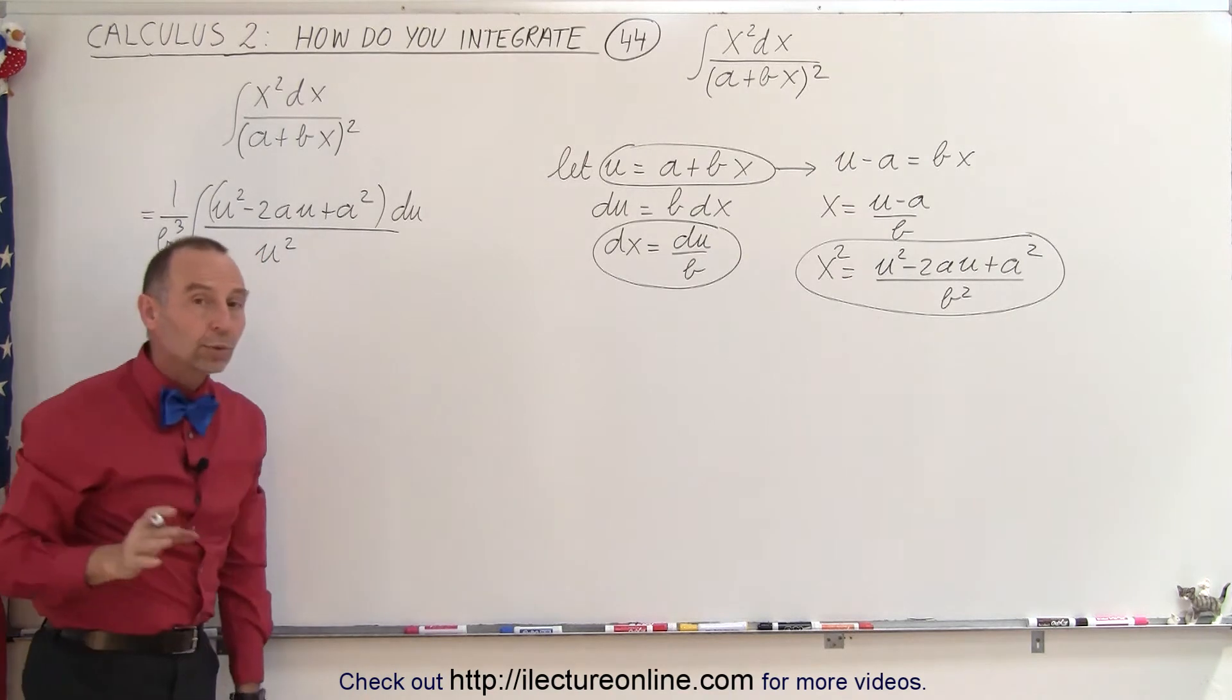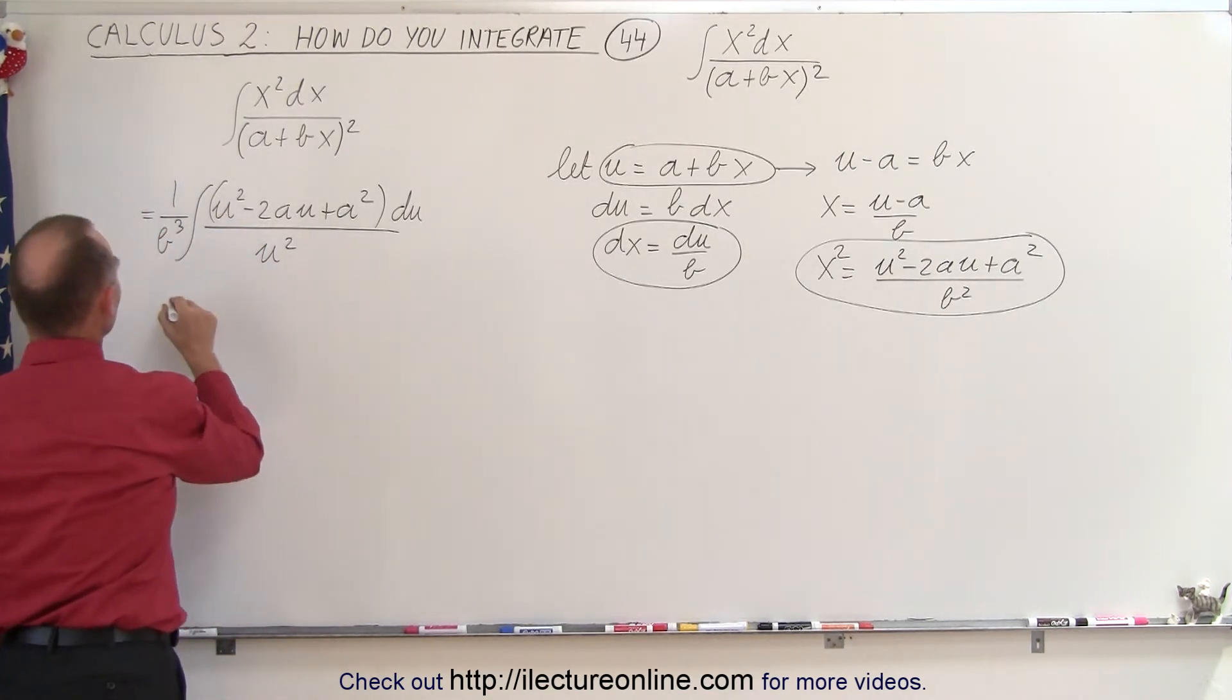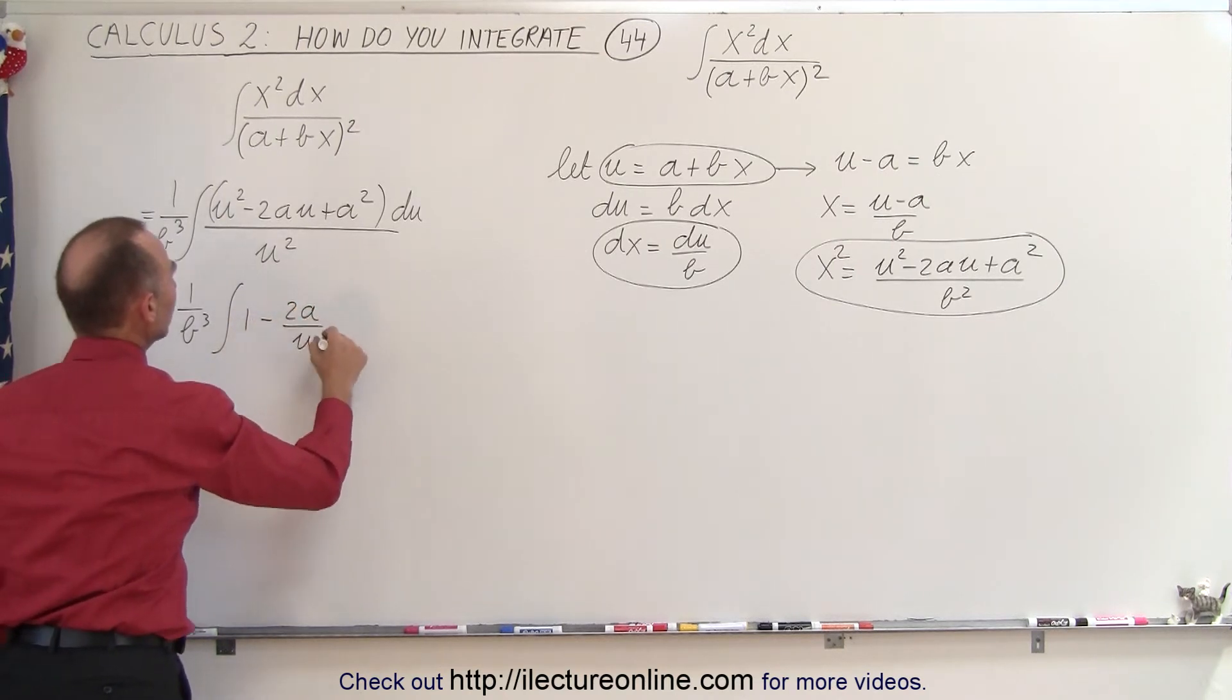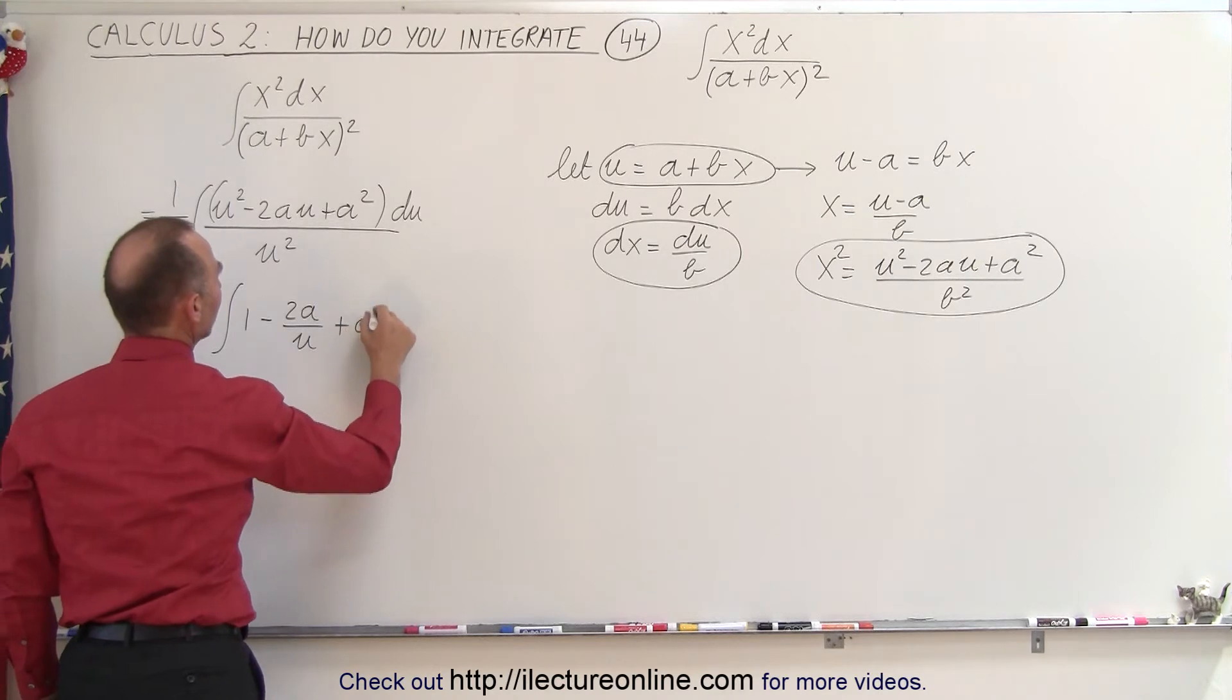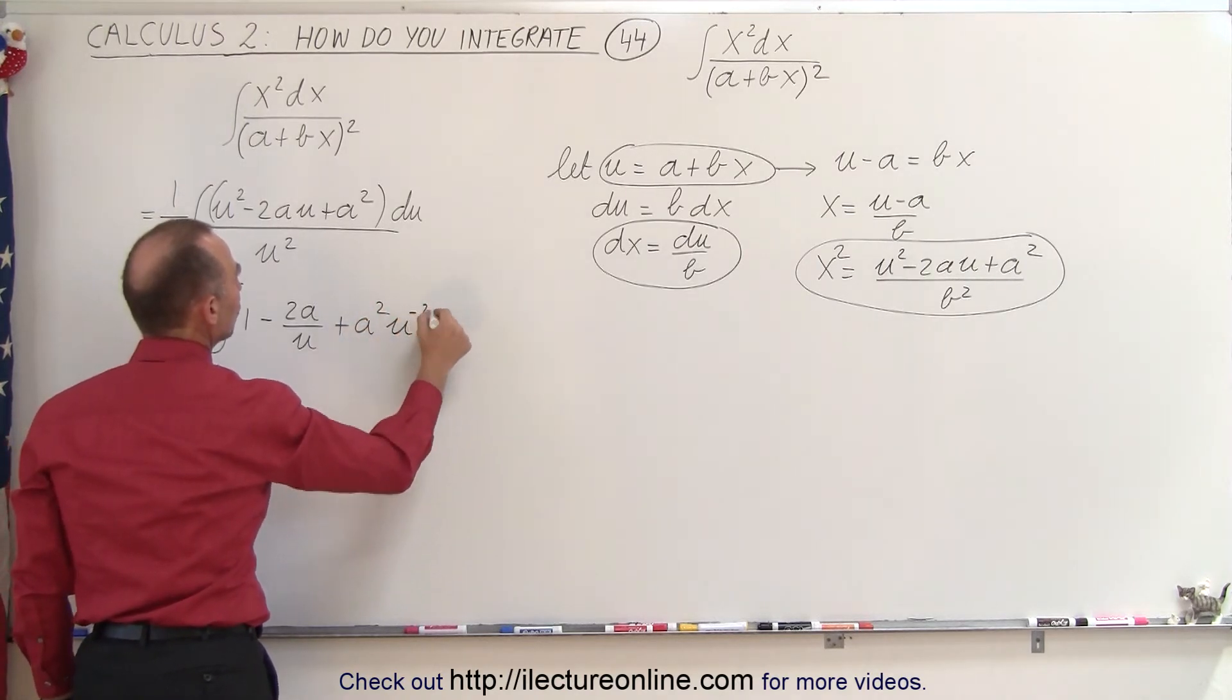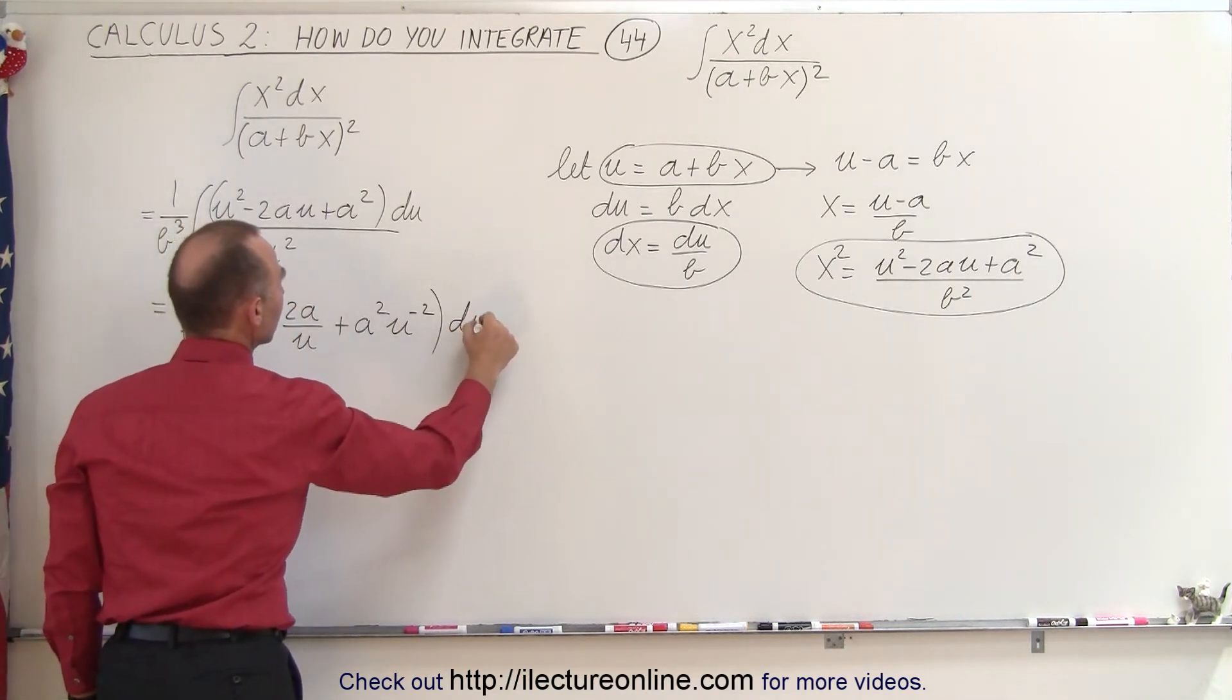And then here again, the best thing to do is to divide the denominator into the numerator, and you'll get the following. 1 over b cubed times the integral of u squared divided by u squared is 1 minus 2a divided by u, and plus a squared. Instead of dividing by u squared, we can multiply by u to the negative 2, and the whole thing multiply times du.